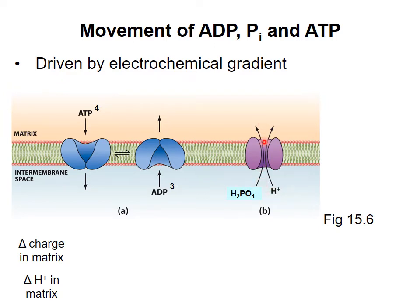The energy for both of these processes comes from the electrochemical gradient across the membrane. Because ATP has one more phosphate group than ADP, ATP is more negatively charged than ADP. So this process — the exchange of ATP in the matrix for ADP in the intermembrane space — results in net movement of one negative charge out of the matrix, or net movement of one positive charge into the matrix. This is favorable because the matrix side of the membrane carries a negative charge relative to the other side.